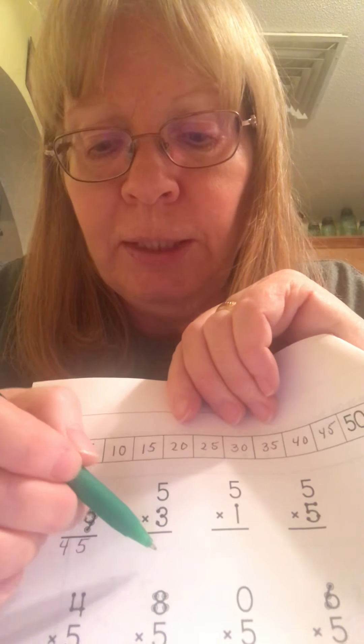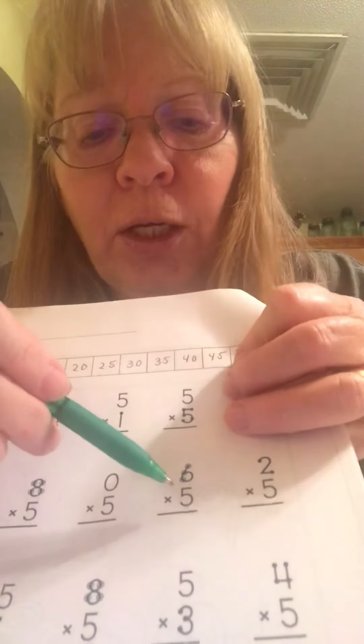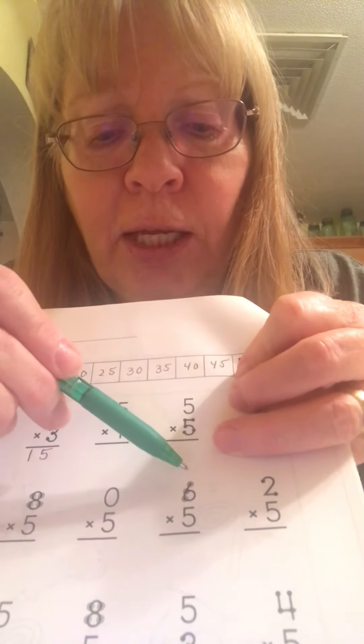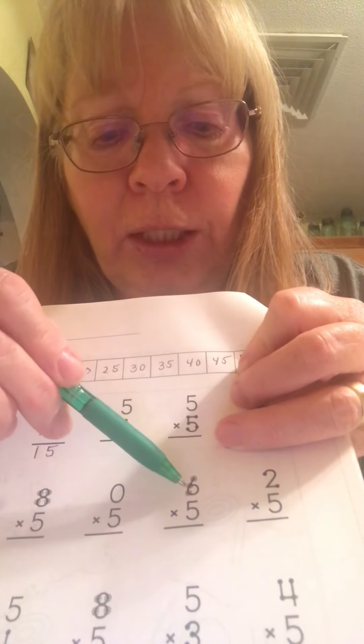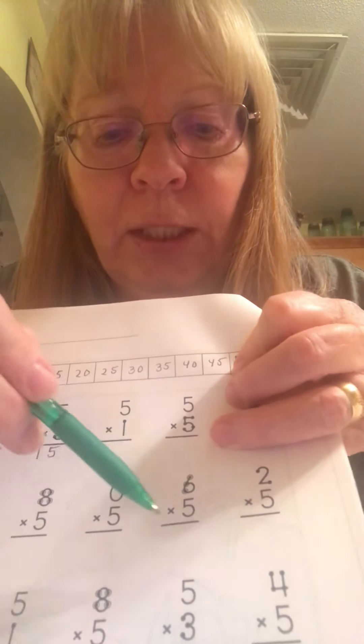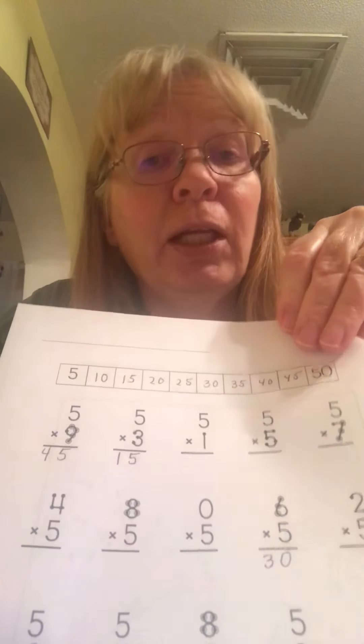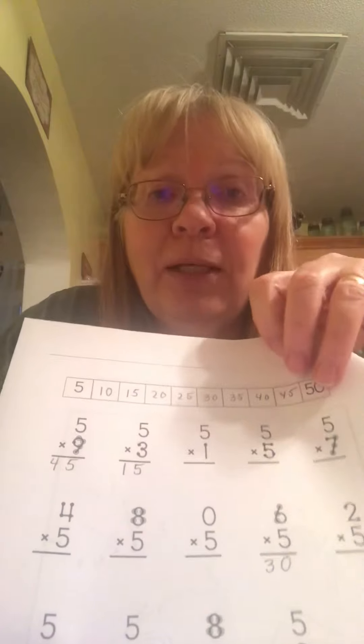Let's do six times five. We're going to count by fives: 5, 10, 15, 20, 25, 30. So the zero goes in the ones place and the three goes in the tens place. And that's all there is to it — we're just skip counting. Like we skip counted by twos, now we're skip counting by fives.